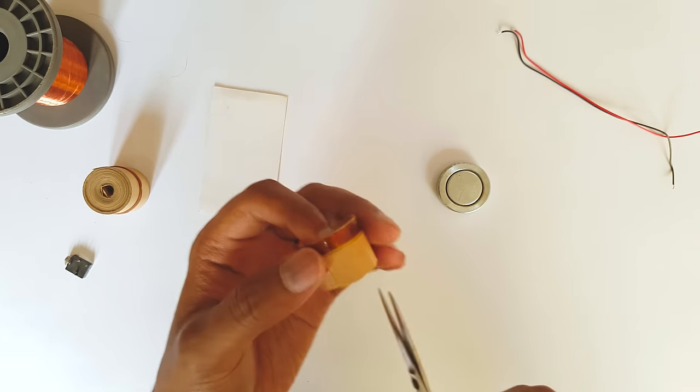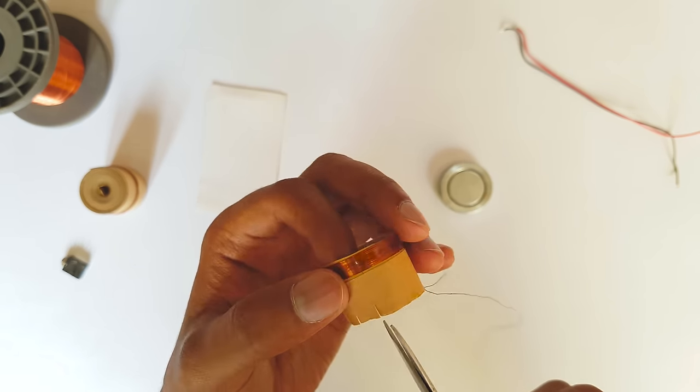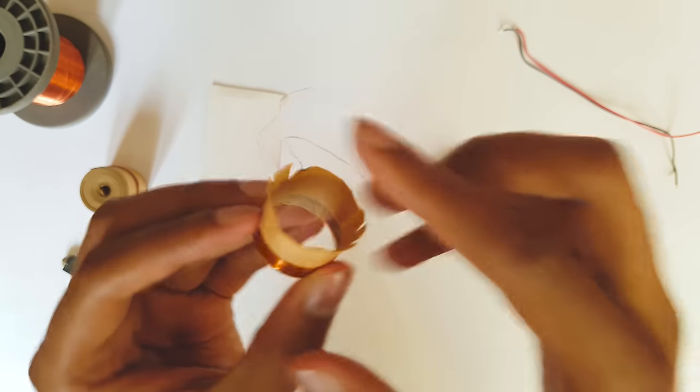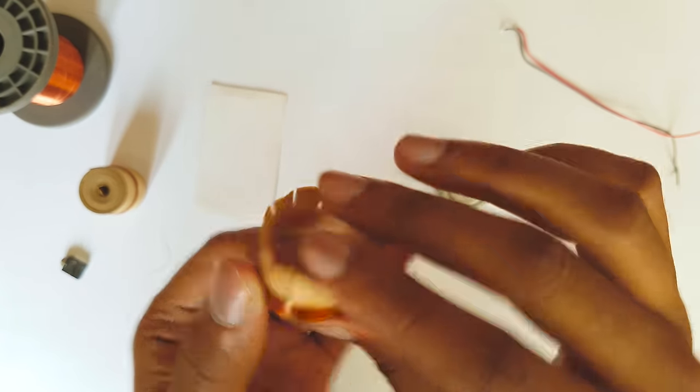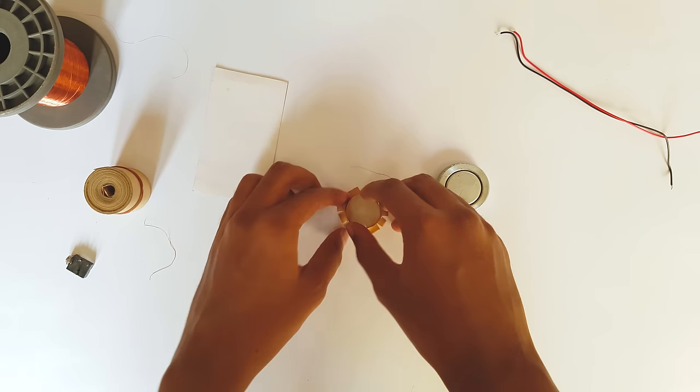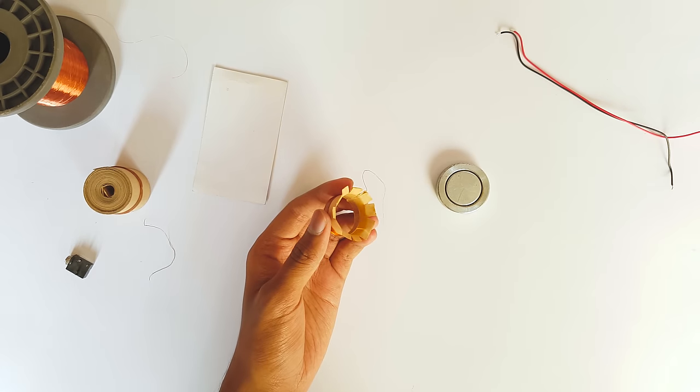So let's start making one. Now you need to attach the coil to the diaphragm. Cut the paper as I am doing now. Bend the paper. You need to apply glue over the paper and stick it to the diaphragm. This is how the coil should look like. Now apply glue over it.